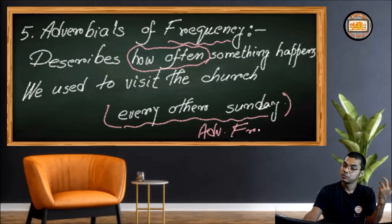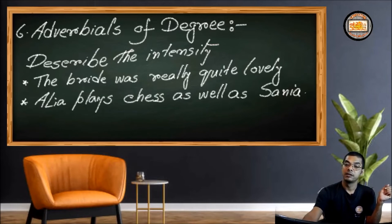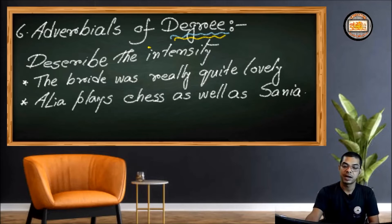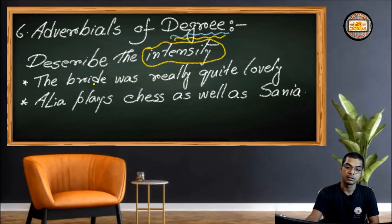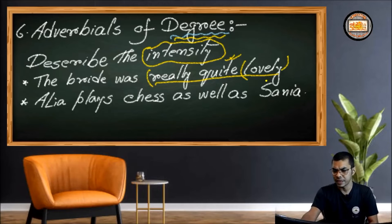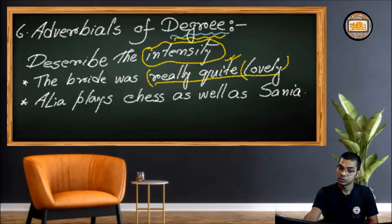The sixth type is adverbials of degree, and it's very, very vital. It's related to degrees of comparison. It describes the intensity of the action. For example: 'The bride was really quite lovely.' 'Lovely' alone is sufficient, but we've added 'quite lovely,' and to make it more intense, 'really quite lovely.' So 'really quite lovely' actually describes the degree — the intensity of her beauty. This is adverbials of degree.